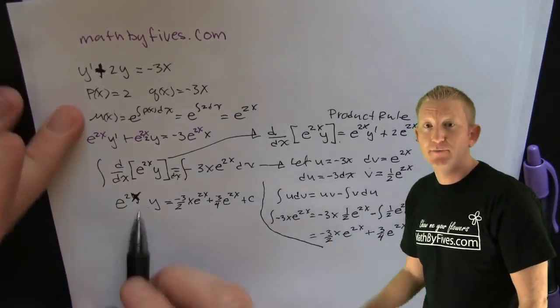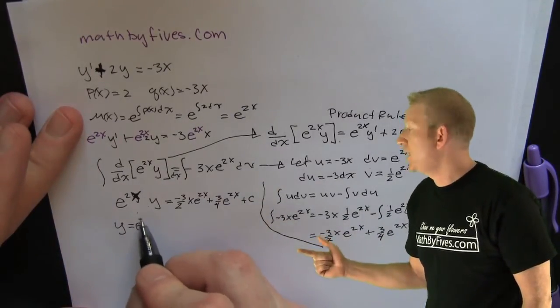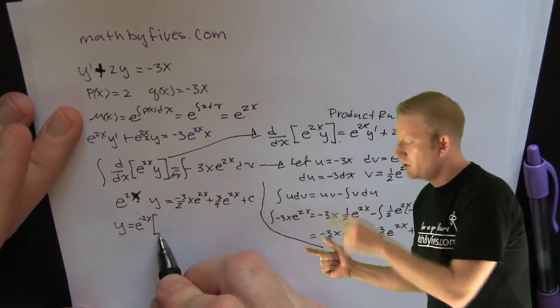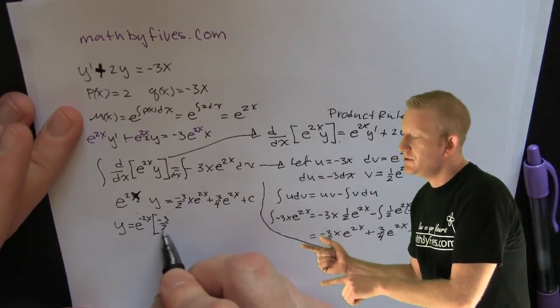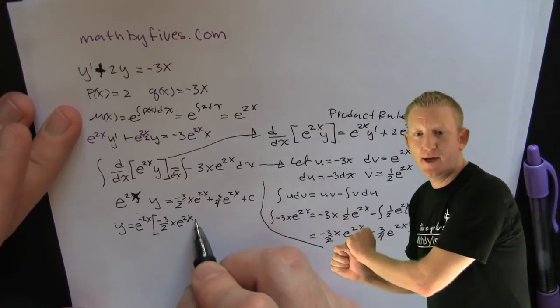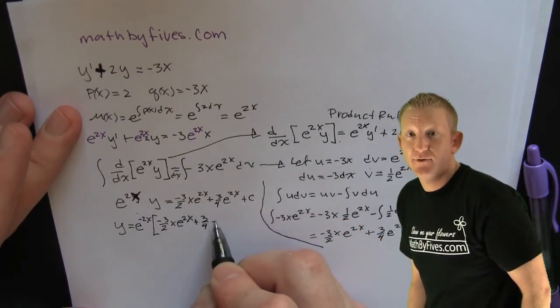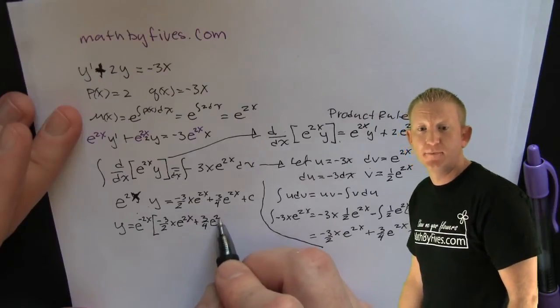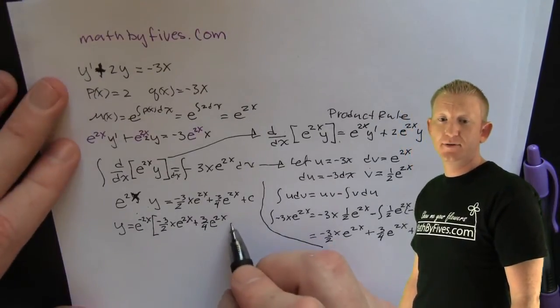Yeah. So now he divides both sides by e to the 2x. Right. And what does that get you? That's 1 over e to the 2x. And then you can use the negative property of exponents. Yeah. Okay. Good. And that's how you got the minus 2x over there. Right. Box it up. Because I think he's done.